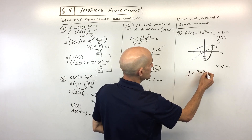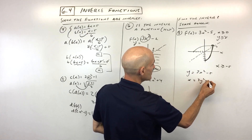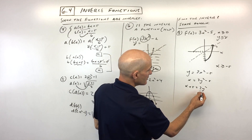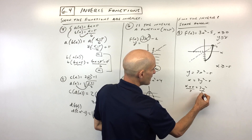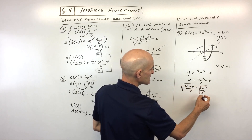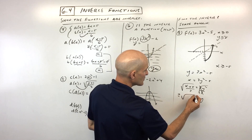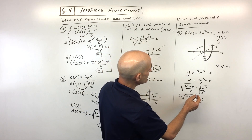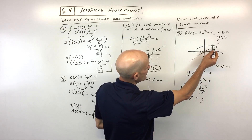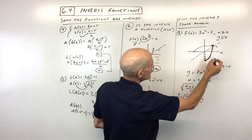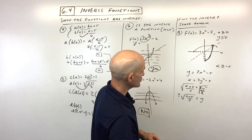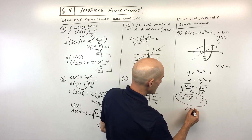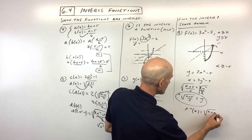To find the inverse: start with 3x squared minus 5, interchange x and y, then solve for the new y. Add 5 to both sides, then divide everything by 3. Now take the square root of both sides — you might ask about the plus or minus, but because of our domain restriction (x greater than or equal to 0), we only want the positive square root. So f inverse of x equals the square root of (x plus 5) over 3, with domain x greater than or equal to negative 5.